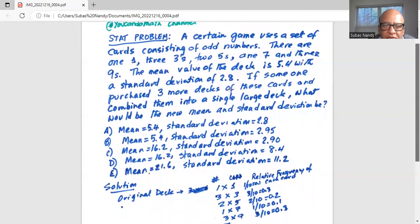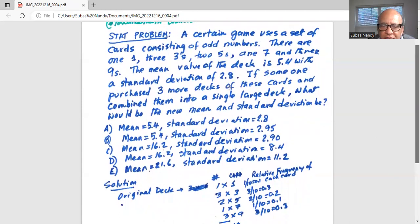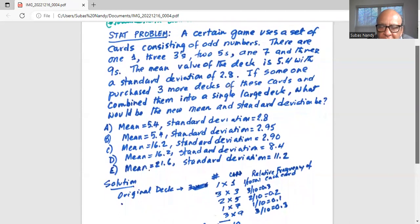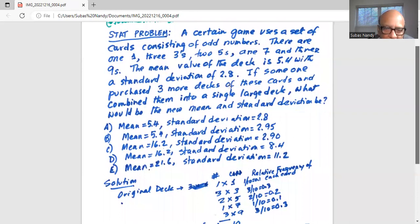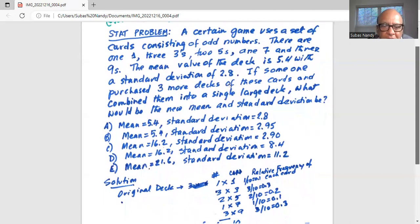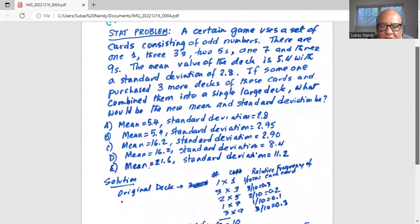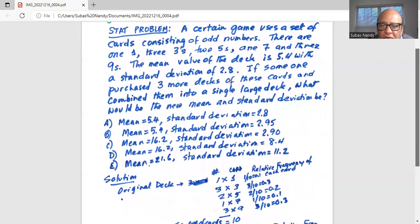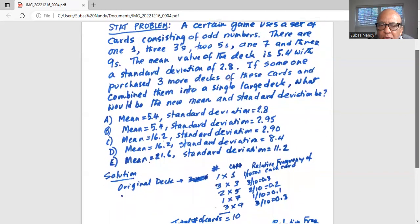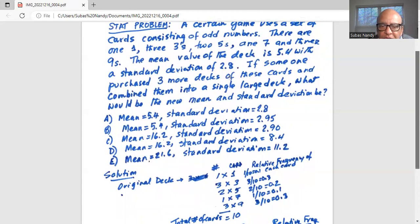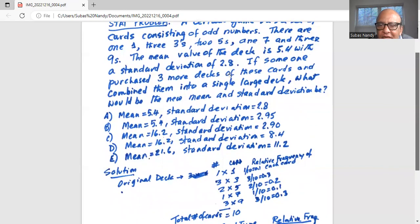So how do you solve this problem? Let's consider the original deck of cards. We have one card of number 1, three cards containing number 3, two cards containing number 5, one card containing 7, and three cards containing 9. So total number of cards is 1 + 3 + 2 + 1 + 3, which is 10 cards.